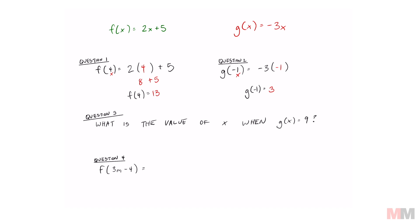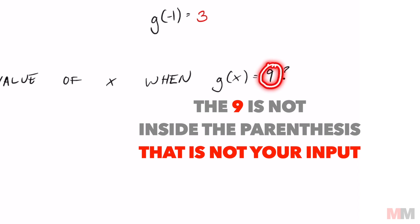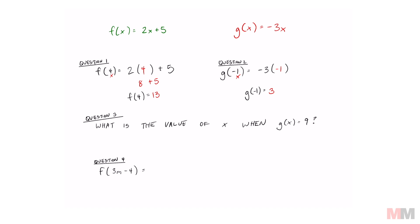Moving on to question number three, which is different. What is the value of x? So this time, I need to find x when the function of g equals nine. Notice how this nine is not inside this parentheses. So the biggest mistake that I see here is that people just take that expression and plug in a nine. But remember that in order for you to do that, that nine has to be the one in the parentheses. So when you get a question like this, all you have to do is replace.